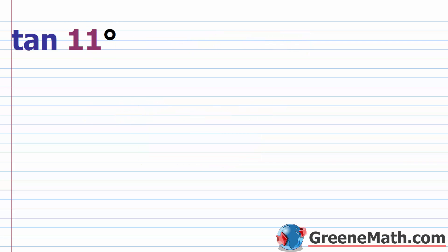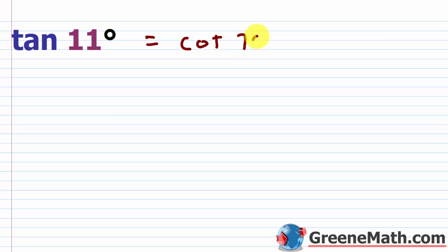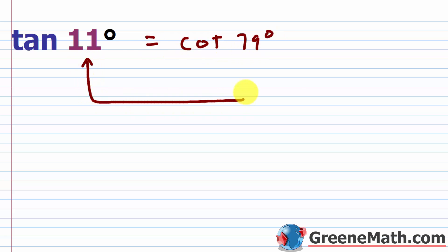Another example: tangent of 11°. Its co-function is cotangent, so tangent of 11° equals cotangent of (90° − 11°) = cotangent of 79°. Always check that the two angle measures add up to 90°.